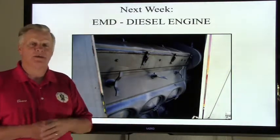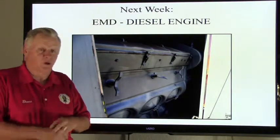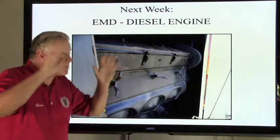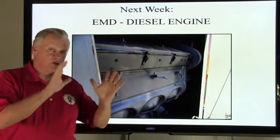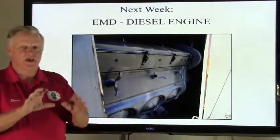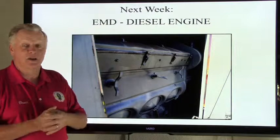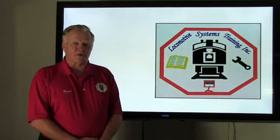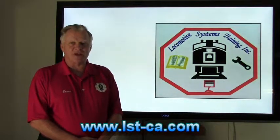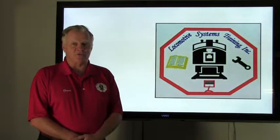So, looking back at what we covered: last week was locomotive orientation and the letter F, and this week we went through all the major subcomponents — what's in the cab, what's in the nose compartment or short hood, and what's out in the long hood. Stay tuned — next week we're going to start talking about this in a bit more detail. Thank you for watching today's video. If you get a chance, go to our website and check out the classes available at lst-ca.com. Thank you and have a safe day.